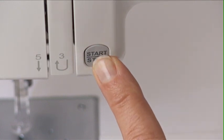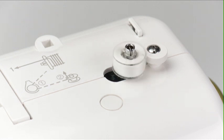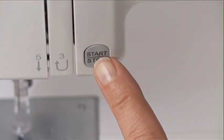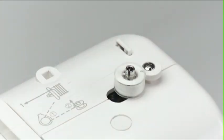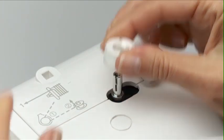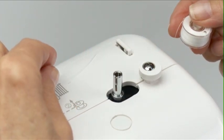Press the start stop button again. When the bobbin is fully wound it will stop spinning. Press the start stop button to stop the machine. Return the bobbin winder spindle to the left and remove the bobbin. Cut the thread with the thread cutter on the top of the machine.